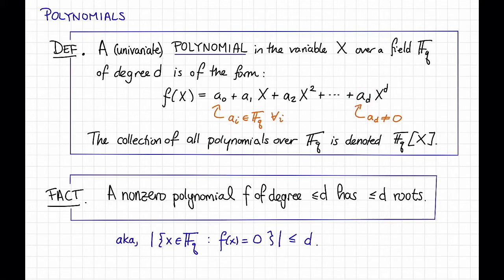The collection of all univariate polynomials in the variable capital X over f_q is denoted like this as f_q[X]. Just a note, depending on your background, using a capital X as a variable in a polynomial is either totally normal or totally weird. If it's totally weird, sorry, we're going to do it.